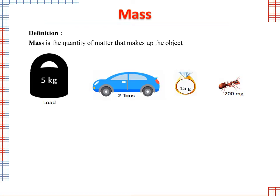Consider the objects. The mass of the load is 5 kg. The mass of the car is 2 tons. The mass of the ring is 15 g. The mass of the ant is 200 mg.